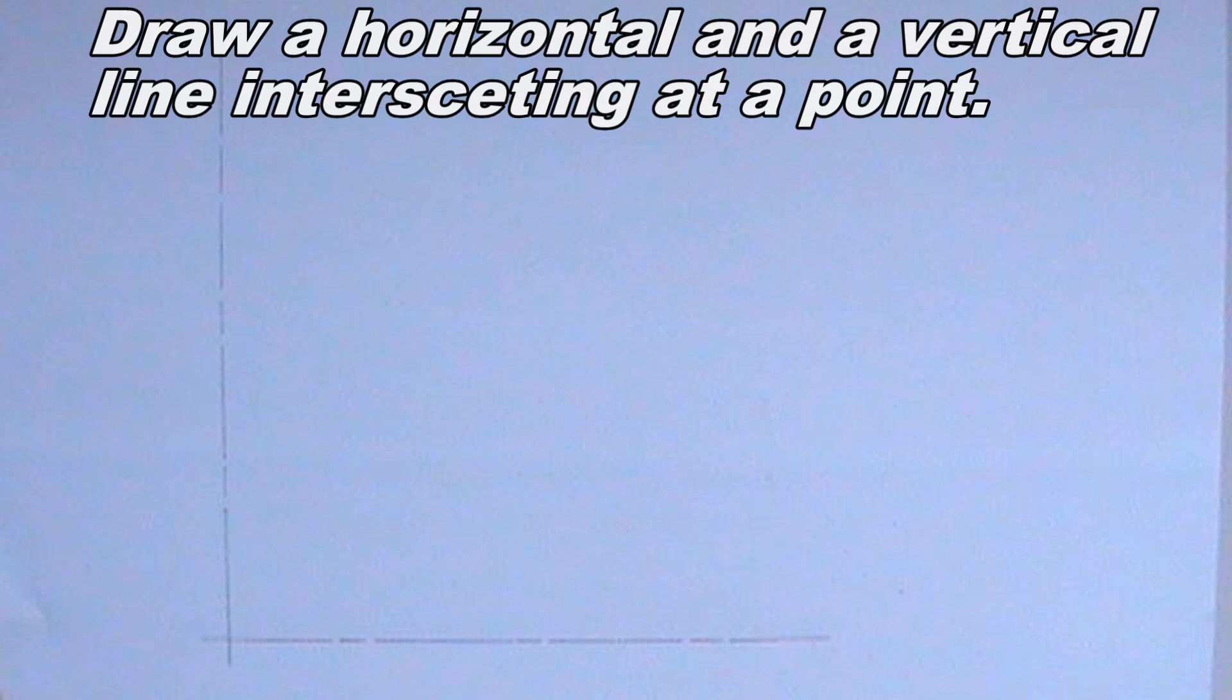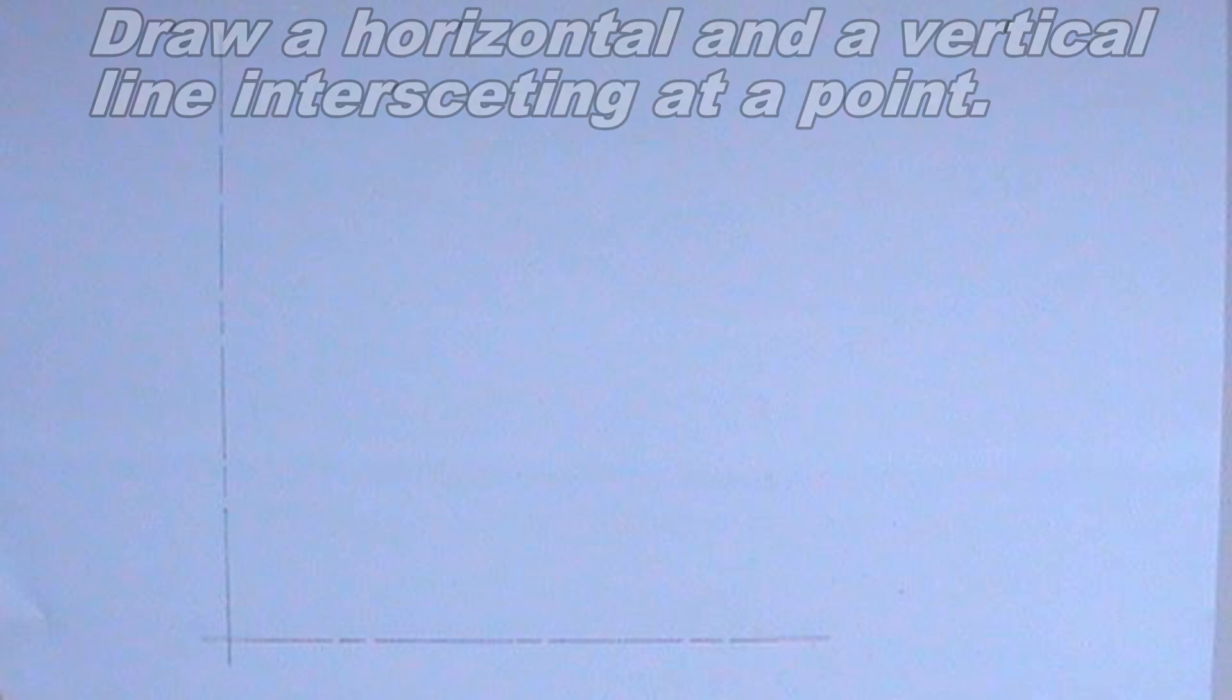To draw this particular mechanism locus, the first step is to draw a horizontal and a vertical line. The horizontal and vertical line should intersect at a point. I have already done this step. The next thing to do is to label the point where the line intersects O.